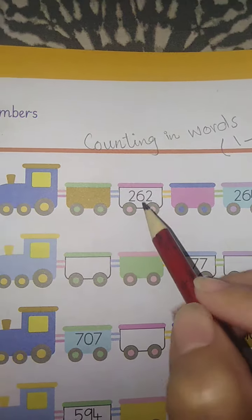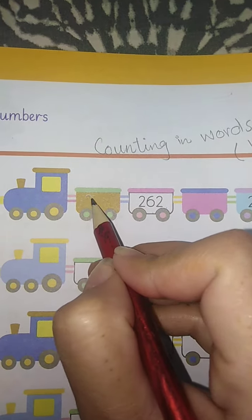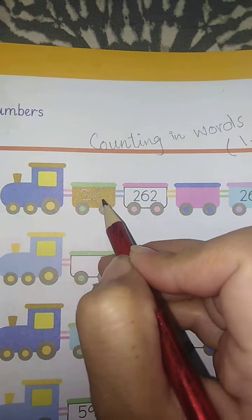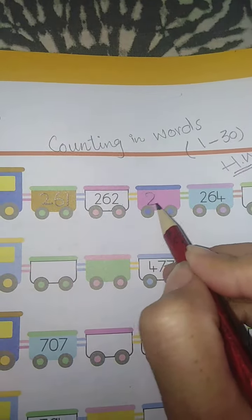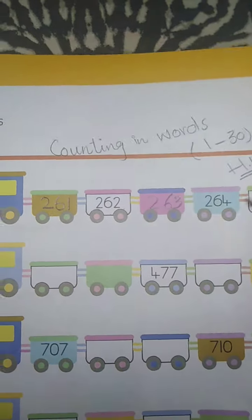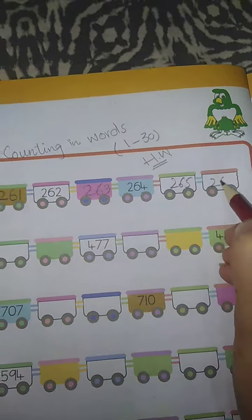Next page, number 261. The first block is blank, so we start with 261, then 263, 264, 265, and 266.